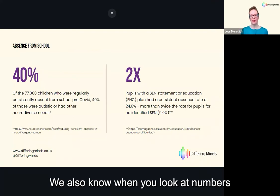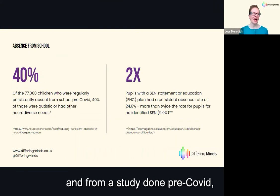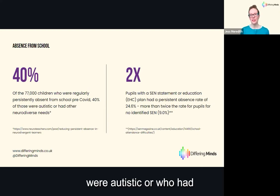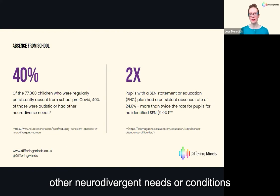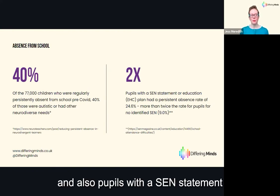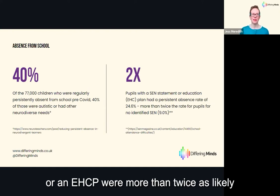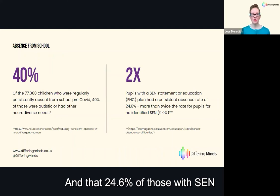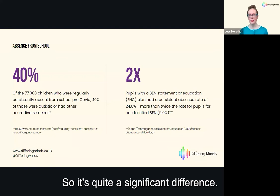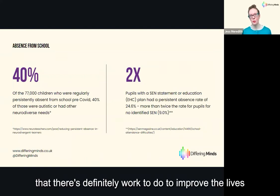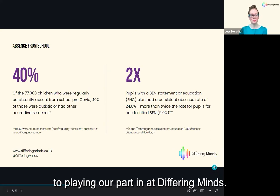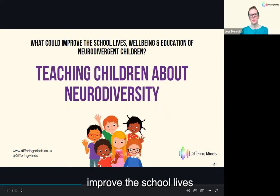We also know this relates strongly to absence from school. From a pre-COVID study, 40% of children who were persistently absent from school were autistic or had other neurodivergent needs. Pupils with a SEND statement or EHCP were more than twice as likely to have a persistent absence rate compared to peers with no identified SEND — 24.6% versus 9%. This tells us there is definitely work to do to improve the lives of neurodivergent children in school.